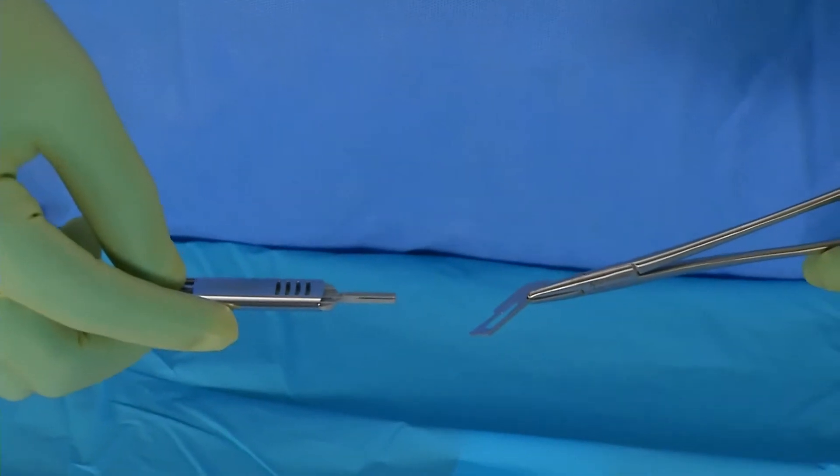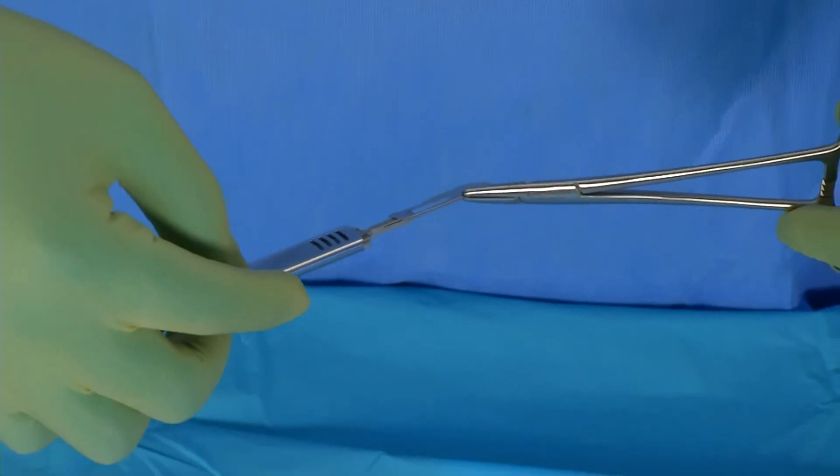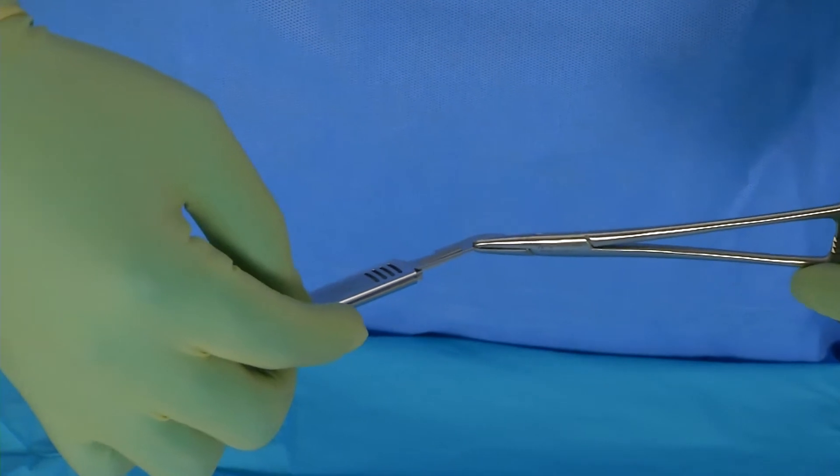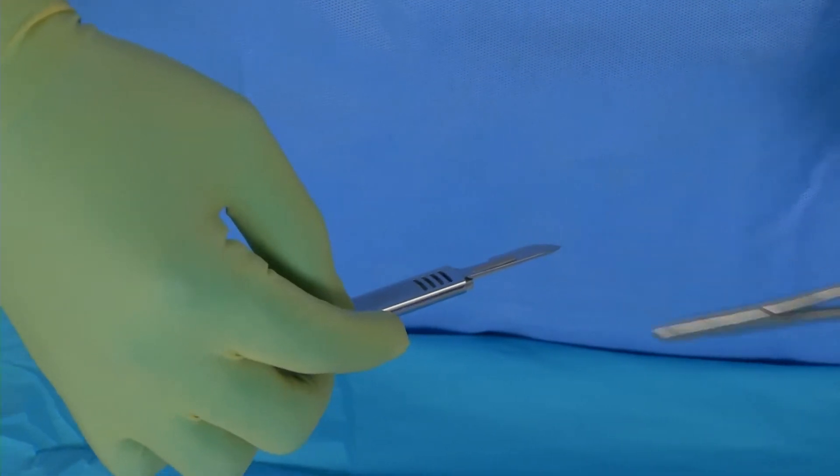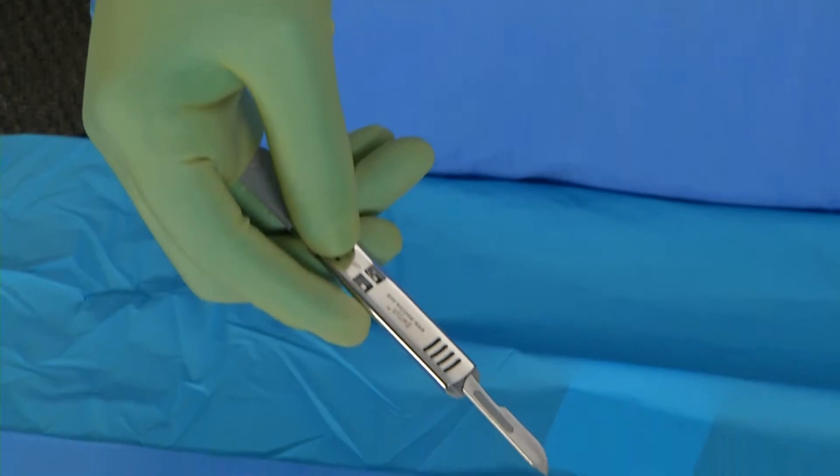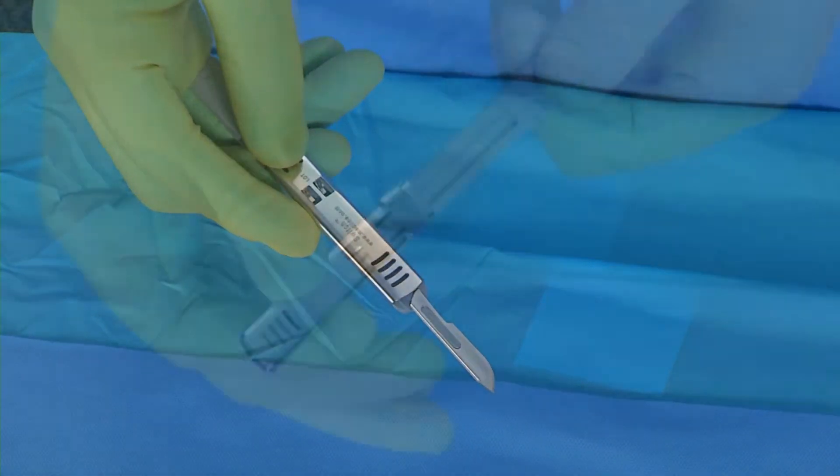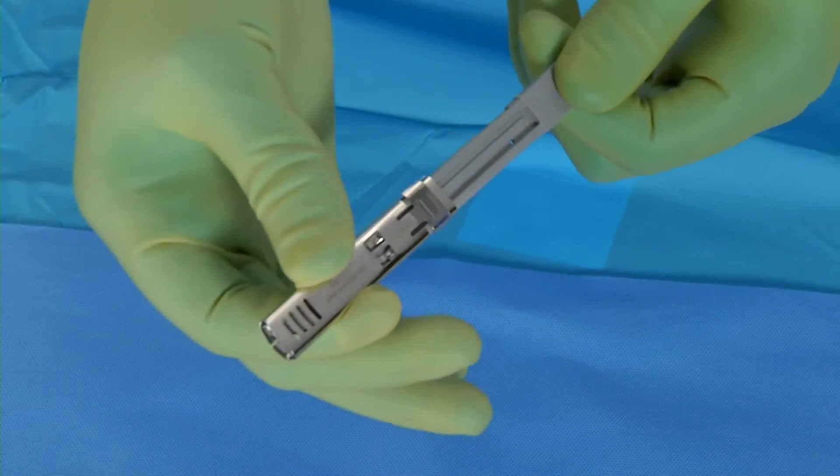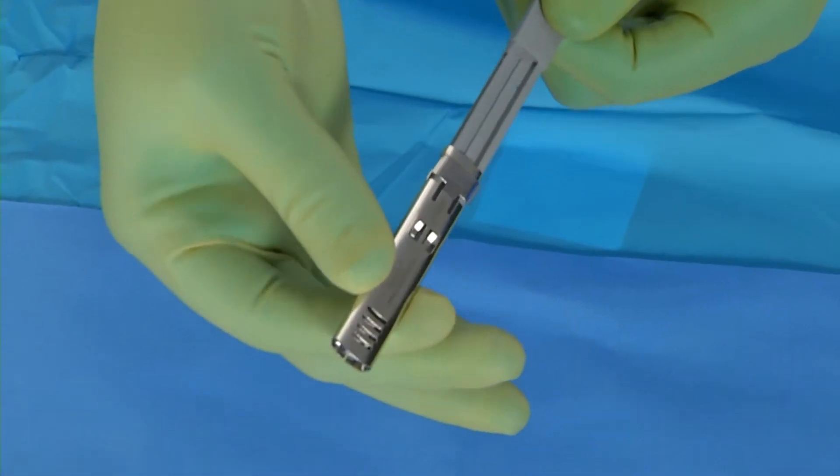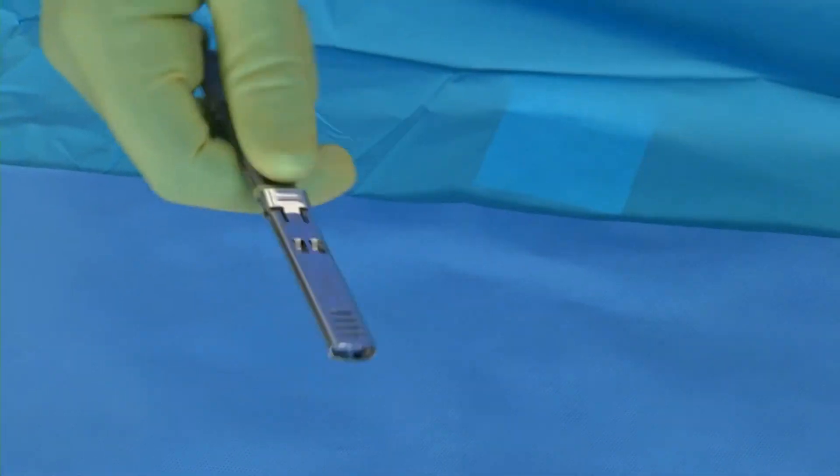To use the switch, load the blade to the handle using normal safe techniques. Press the same button to move the shield backwards into the rear lock position to use the blade.